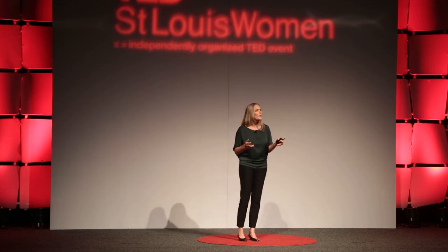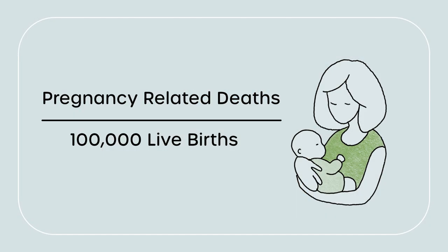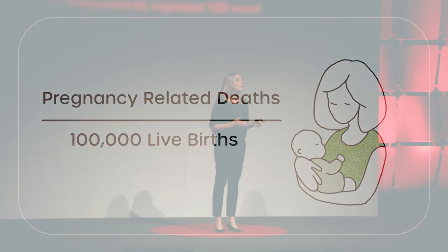People do die from pregnancy-related causes. In fact, this is so important it's been studied for decades around the world. A measurement tool called the maternal mortality ratio has been created. Think back to sixth grade math — a ratio is a way to compare two terms at different time points or between different locations or groups. The maternal mortality ratio: you want to see that go down.